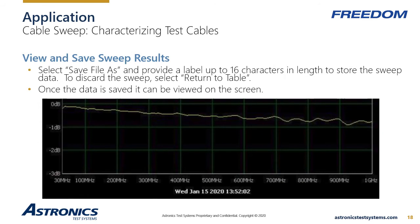Once the test cable has been swept, the user is prompted to save the data or choose to discard it. Once saved, it is displayed on a chart, providing the user with an indication of the cable's performance. If this data does not match the manufacturer's data sheet, the cable may be damaged and should be discarded and replaced. Sweeping a cable several times after moving it around can help identify intermittent cable problems.